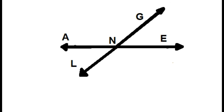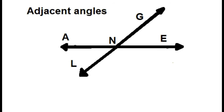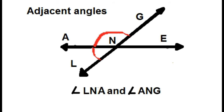Two intersecting lines form angles and they also have names: adjacent angles, vertical angles, and linear pair. Let's start with adjacent angles. Angle LNA and angle ANG are adjacent angles.